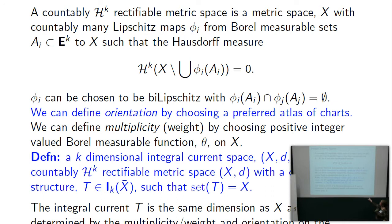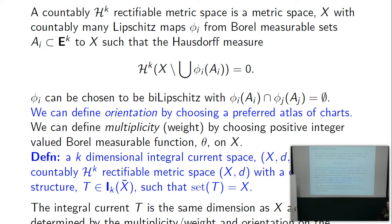Suppose X is a compact oriented Riemannian manifold. X is the manifold itself with the restricted distance from the Riemannian metric, and T is how it acts on differential forms — integration over M. Then the boundary is the boundary of M with the restricted Riemannian distance, and integration over the boundary. So integral current spaces are just like Riemannian manifolds with a notion of integration of a form. You can also make it slightly less smooth — a Lipschitz manifold — it's still well-defined since integration is defined almost everywhere.